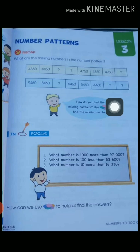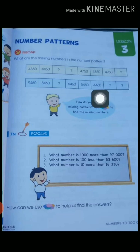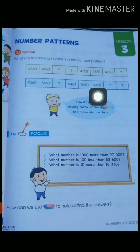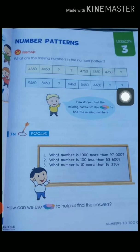Now we have to find the second-last number. We subtract 1,000 from 4,460 and get 3,460. Then we subtract 1,000 from that and get 2,460, which is the last number.